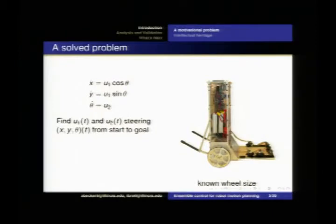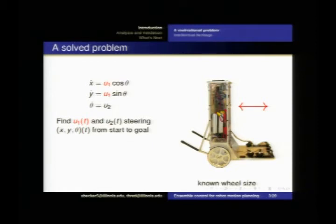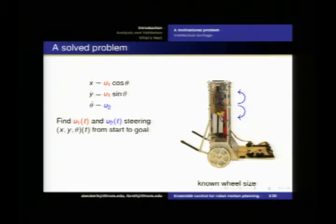Let me start with a motivating example. Here is a simple differential drive robot. We have two inputs: U1, which is the forward velocity — it can move forward or backwards — and U2, a turning command to turn left or right. If we want to move this robot from a start position to an end position, that's a solved problem. We can find U1 and U2 as a function of time — that is, if we know the wheel size of this robot.